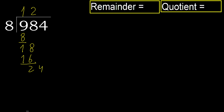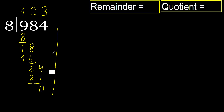Bring down: 24. 8 multiplied by 3 is 24 — 24 is not greater. Subtract. Next. There is no more number, therefore finish.